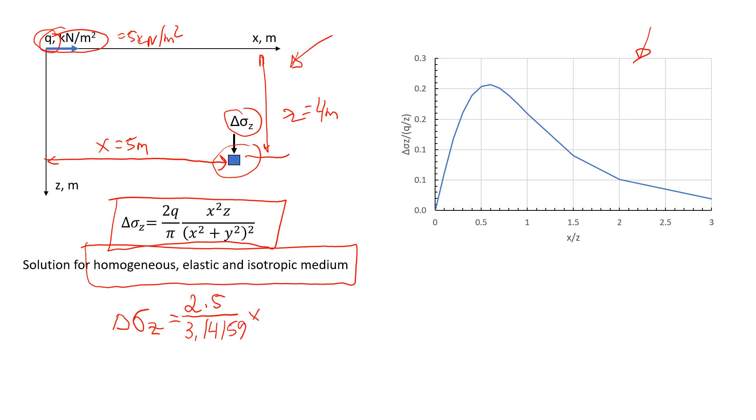Then we're going to multiply by the x in the power of 2. So it will be 5 in the power of 2 times z, which is the depth 4 meters, and divide by, I put here, 5 in the power of 2 plus 4 in the power of 2. And everything is in the power of 2.